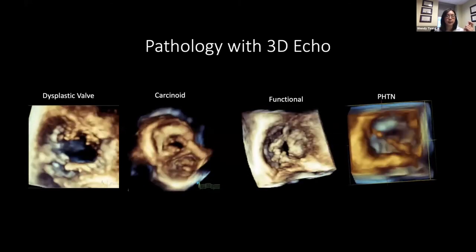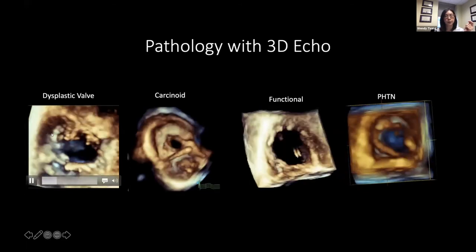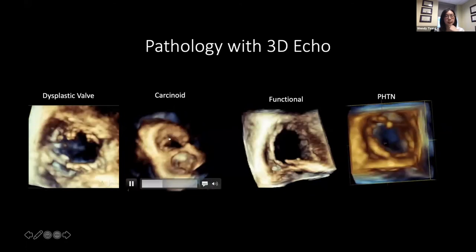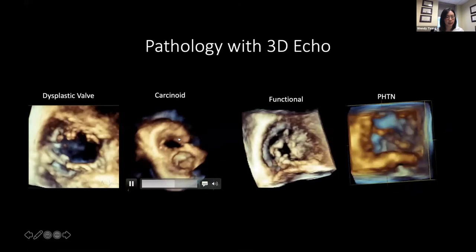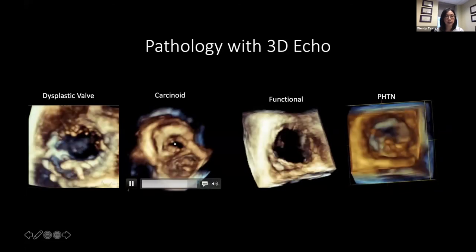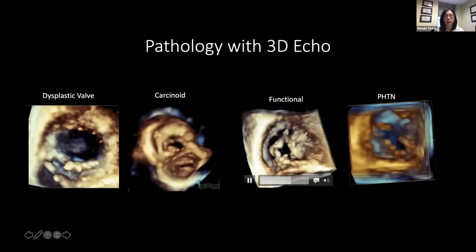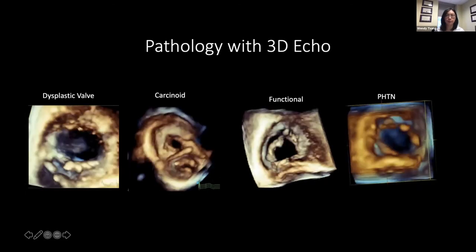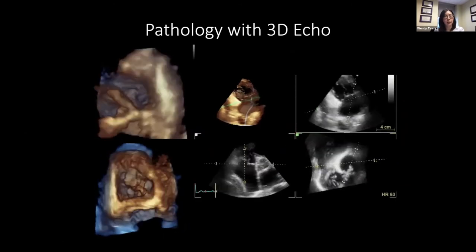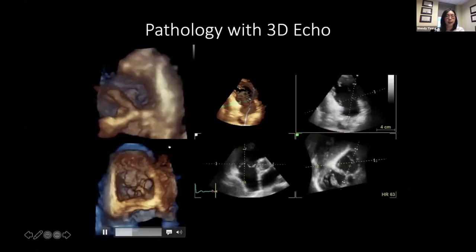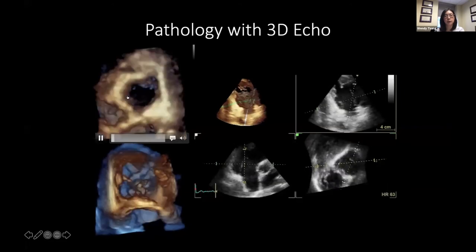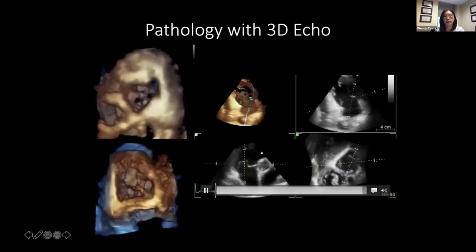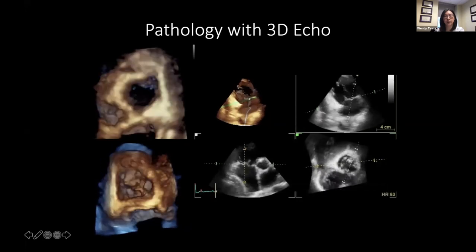Here are examples with 3D echo pathology. Our patient shows the dysplastic valve with different cords coming off the leaflet tips. A carcinoid valve shows thickening of the leaflets and restricted motion. A functional case shows a dilated annulus with leaflets pulled apart. A patient with pulmonary hypertension shows remodeling that almost looks like a bicuspid valve. Using 3D echo with multi-plane reconstructions, you can identify pathology such as a septal leaflet flail — localizing the 3D dataset to see where that flail is coming from.